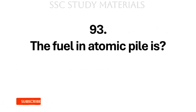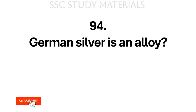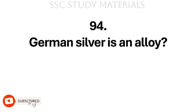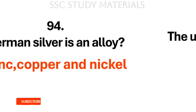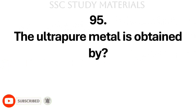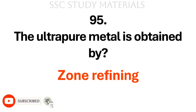Question No. 93: The fuel in atomic pile is? Answer: Uranium. Question No. 94: German silver is an alloy of? Answer: Zinc, copper and nickel. Question No. 95: The ultra pure metal is obtained by? Answer: Zone refining.